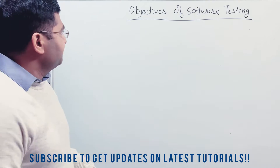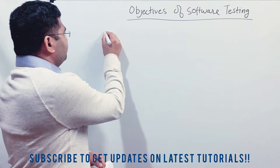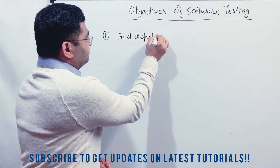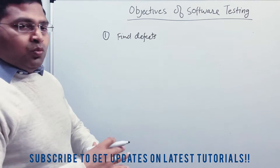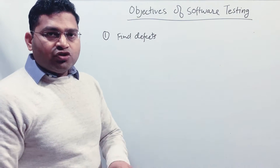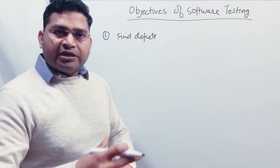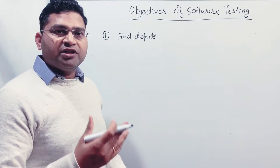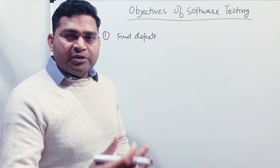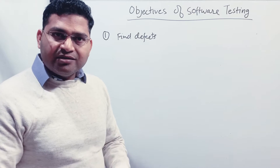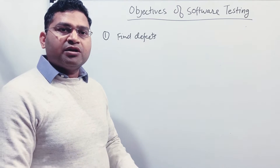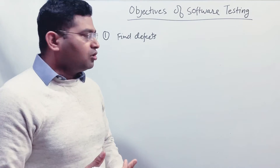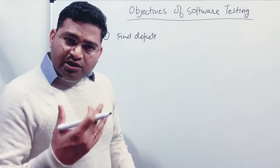So the first objective is to find defects. When you are testing the software, when you run the software or when you are going through the documentation or the requirements, your objective is to ensure that the documentation is clear, it doesn't have any gaps, and there are no documentation defects or any other obvious defects that you can find by reading the document.